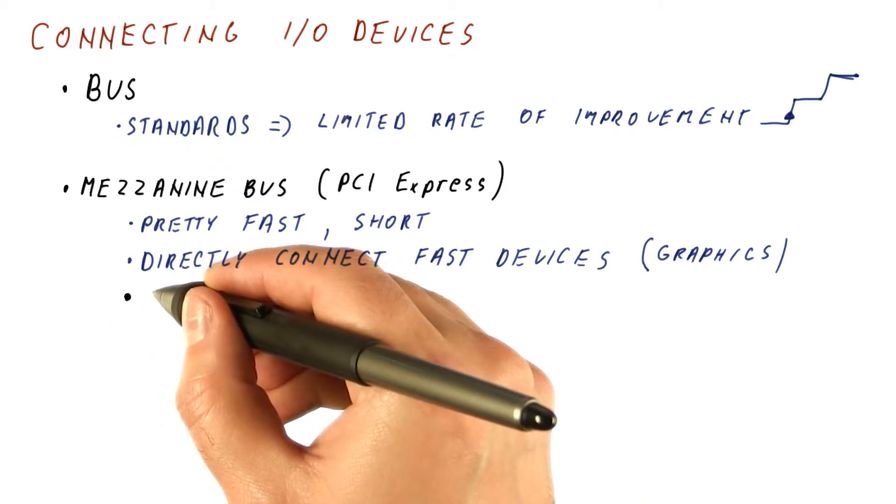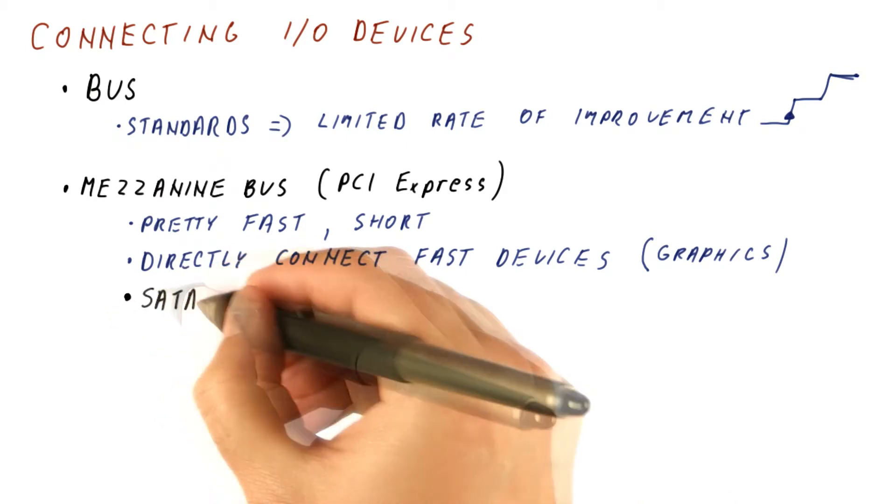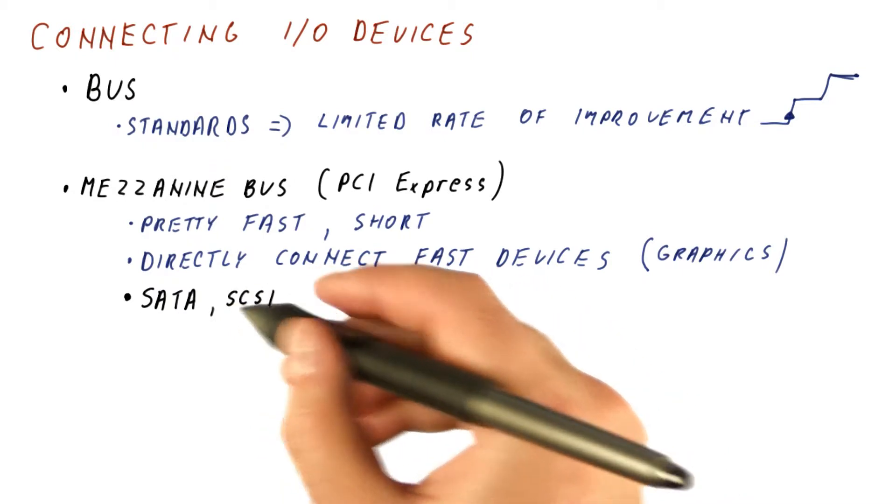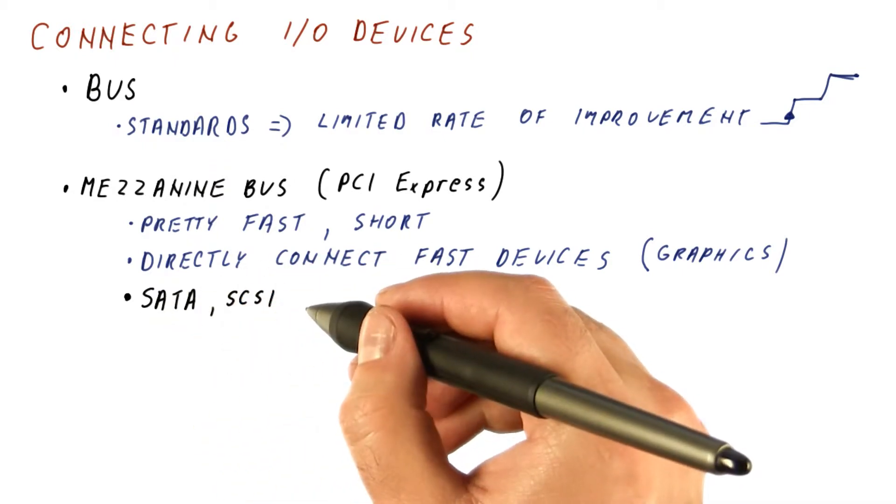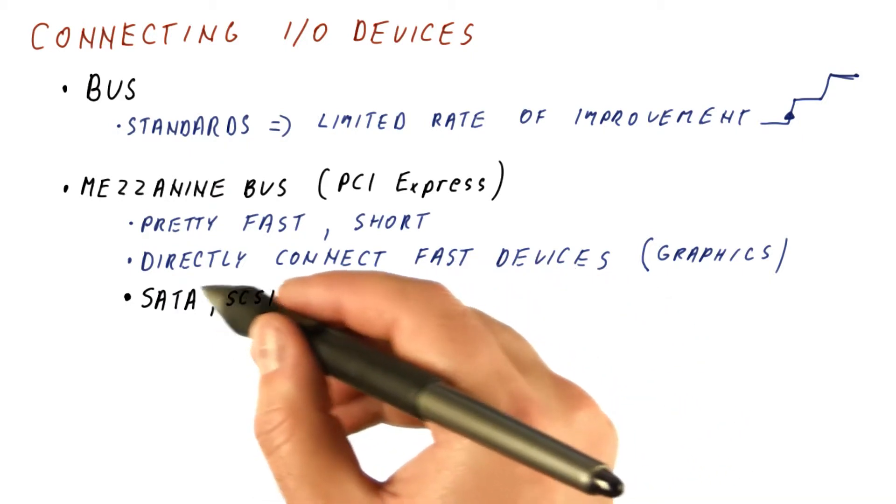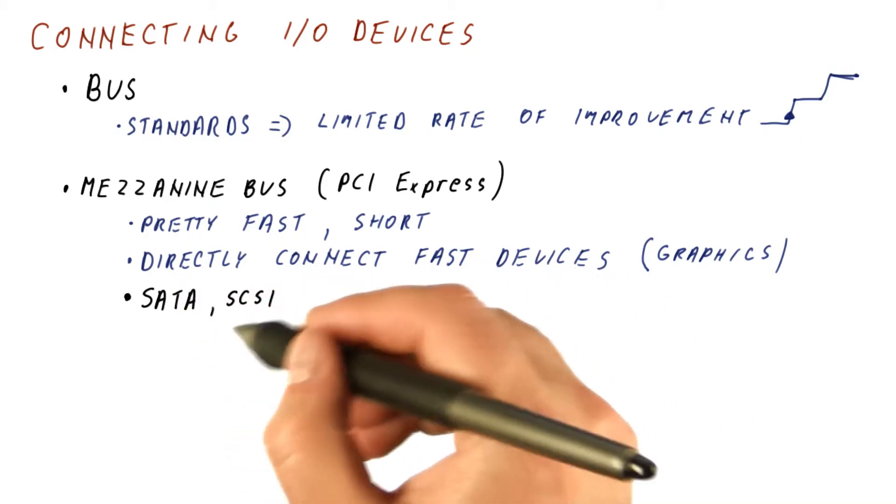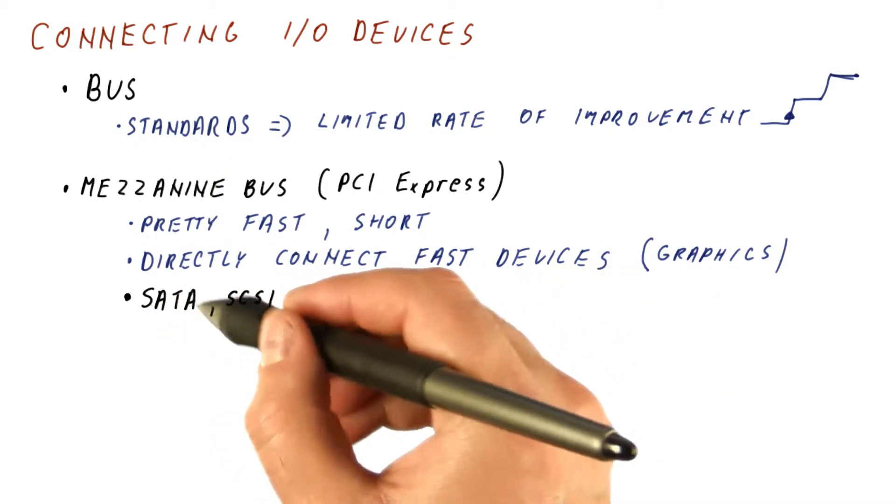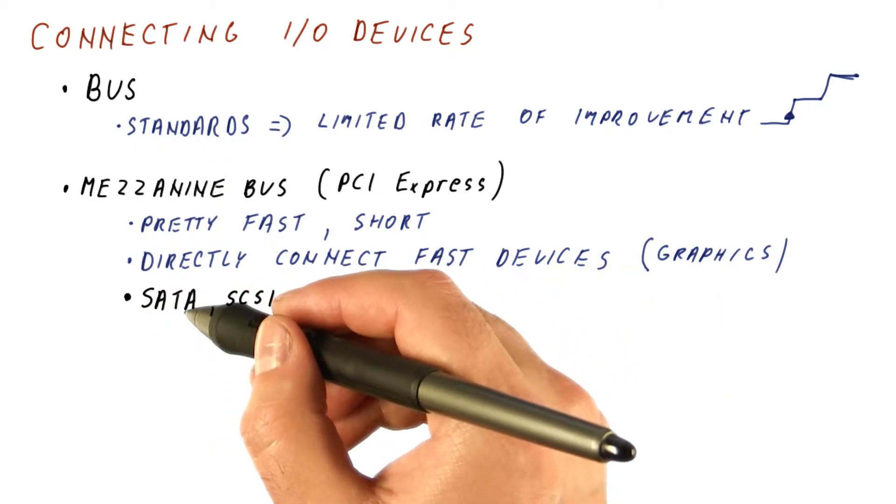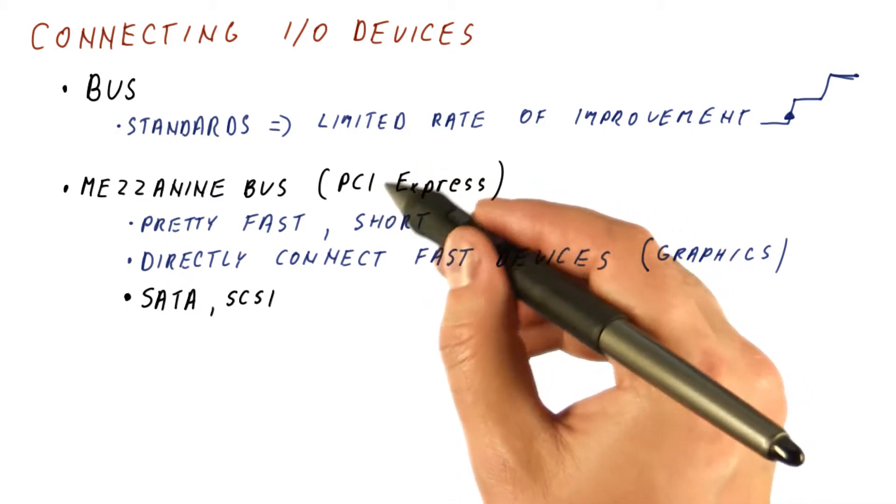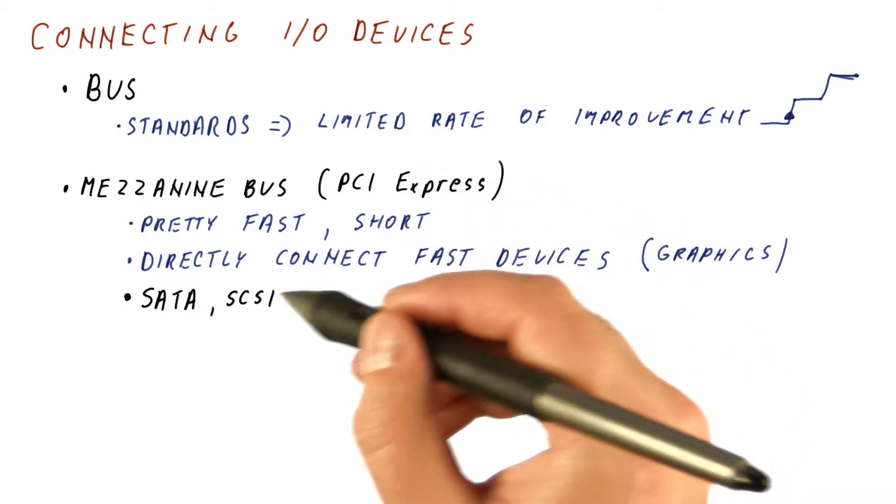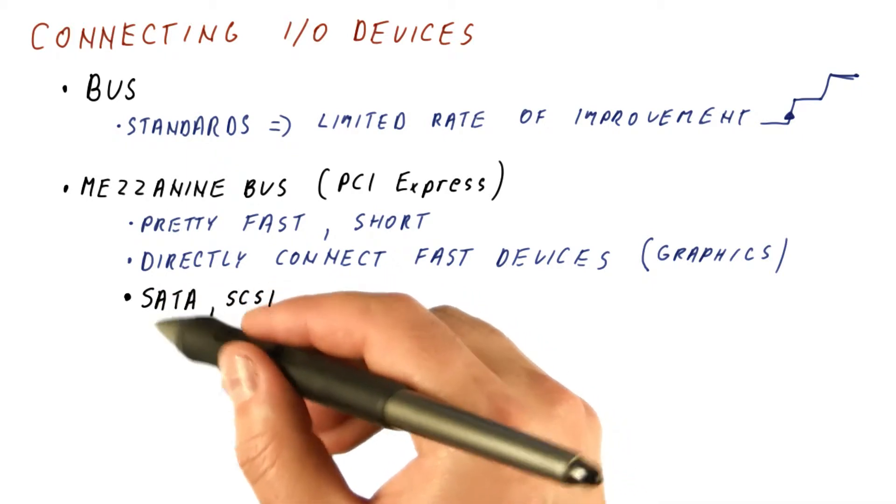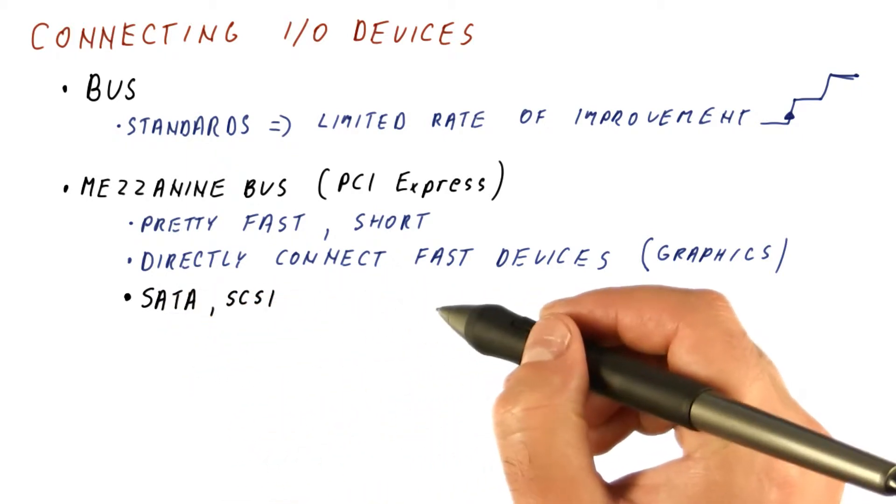Then we connect storage buses to it, for example, SATA or SCSI for hard drives. Both of these are used to connect storage devices. A SATA controller will act as a PCI Express device on the mezzanine bus, but the controller itself actually controls a SATA bus to which we connect devices.